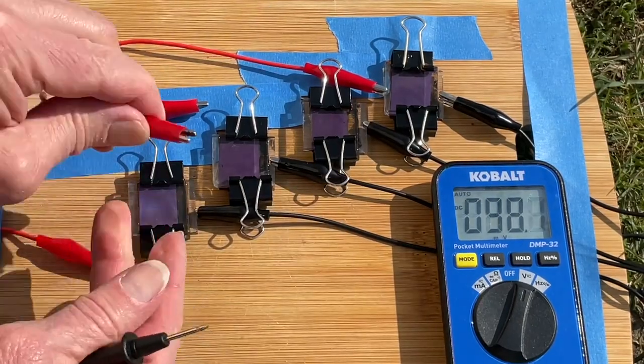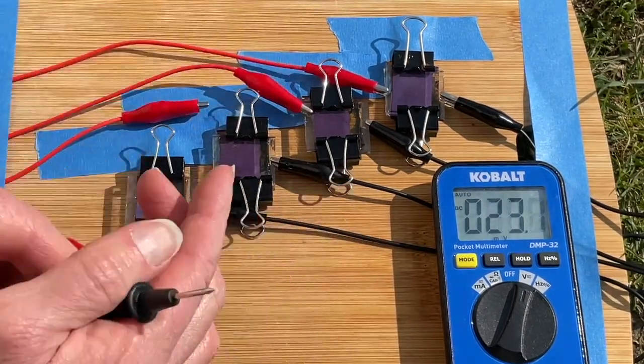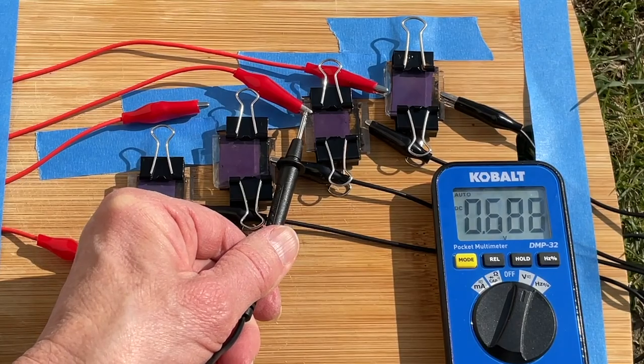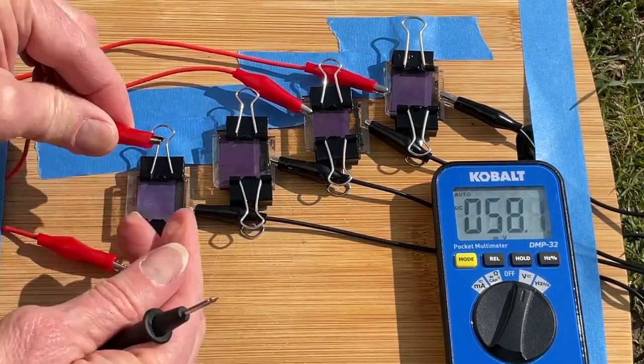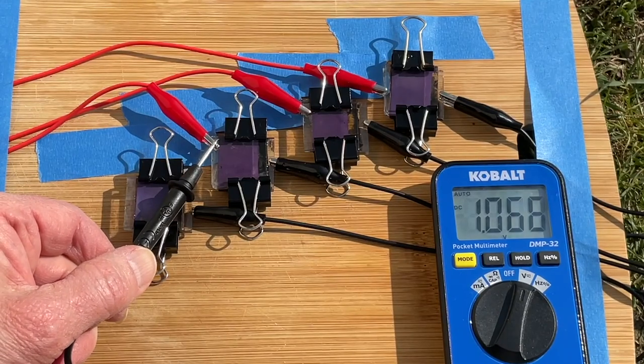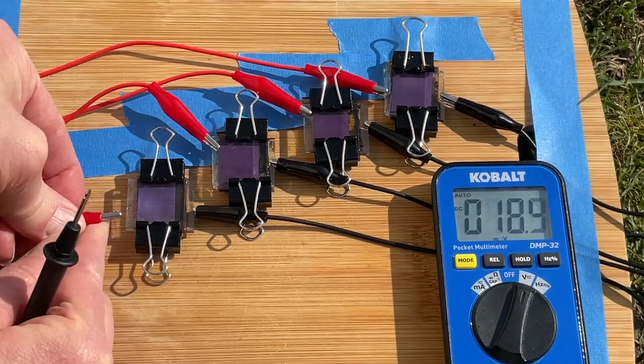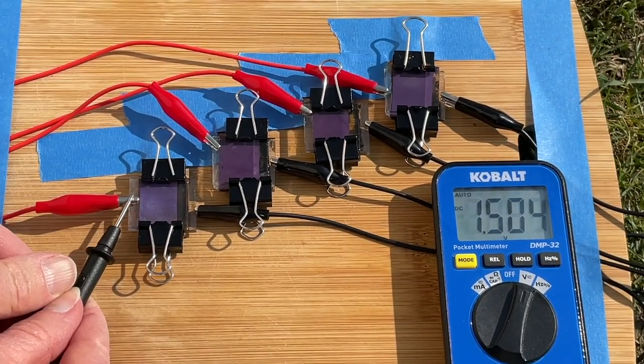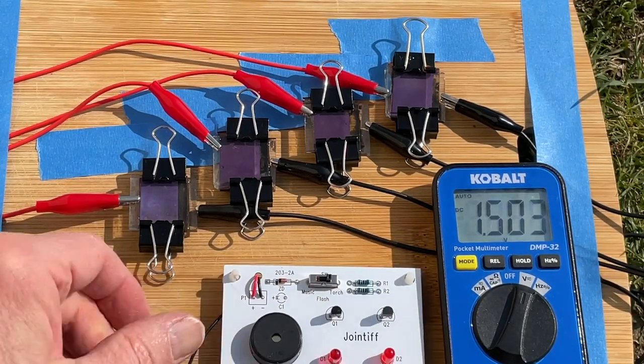Of course, we want our solar cell to do some useful work for us, so let's connect it to a little electronic device. First, I've actually assembled four little cells, and I'm going to link all four of them in series, which will quadruple the voltage and give me enough juice to power a little electronic music box. Check it out!